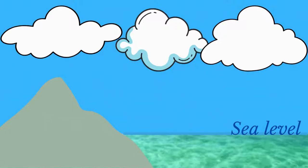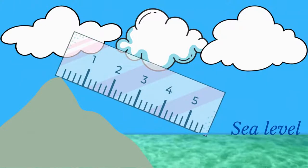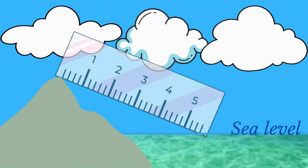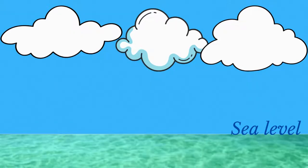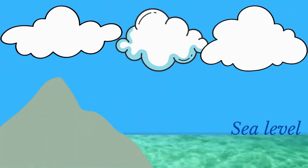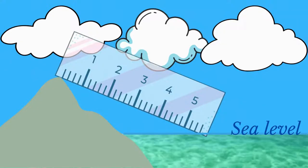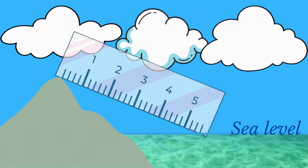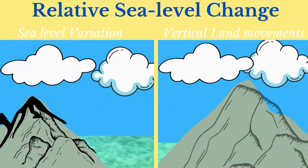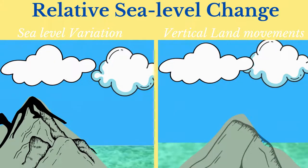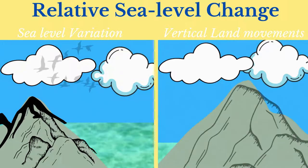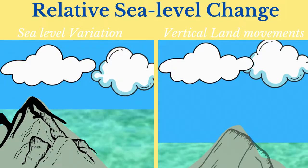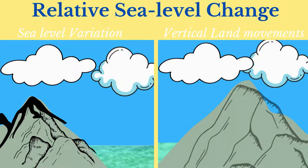Sea level may be defined as the position of the interface between the atmosphere and the ocean surface at any given location. It is the base level to which terrestrial elevation and submarine depths are referred. Over time, the relative sea level may change either due to variations in the sea surface or due to vertical land movements.